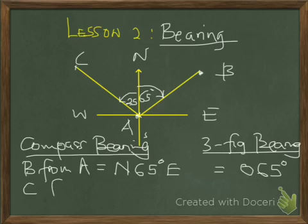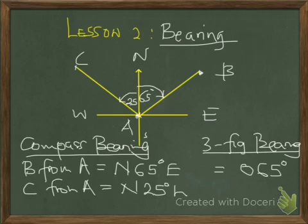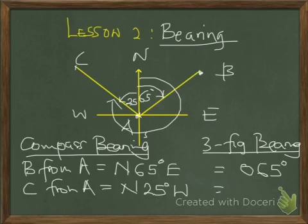The bearing of C from A is North 25 degrees West — this is a compass bearing. For the 3-figure bearing, we measure from the north pole right round, which is 360 minus 25, giving 335 degrees. Note the difference: a compass bearing measures from north or south towards west or east, while a 3-figure bearing measures strictly from the north.